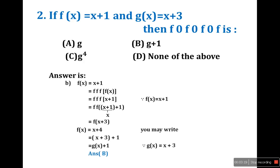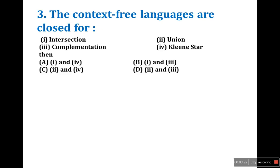The third question: context-free languages are closed under union, Kleene star, and concatenation. This question is asked three to four times in previous papers. Be careful — regular languages are closed under intersection, union, complementation, Kleene star, and concatenation.